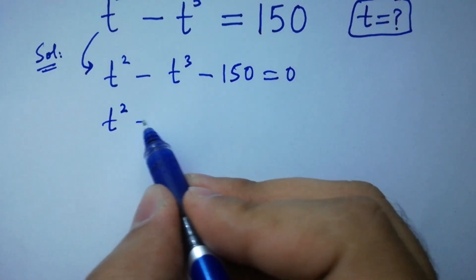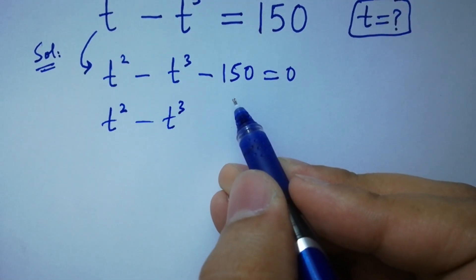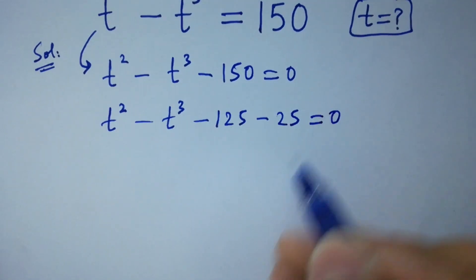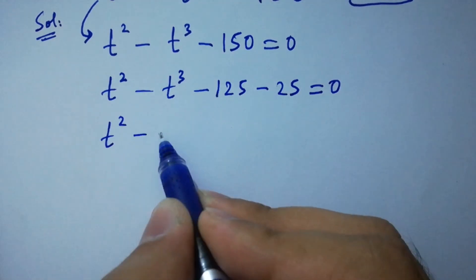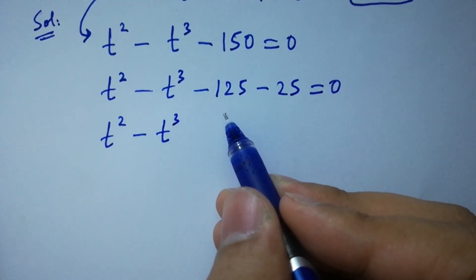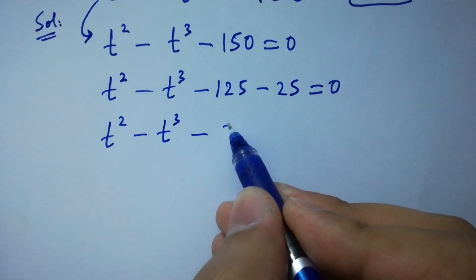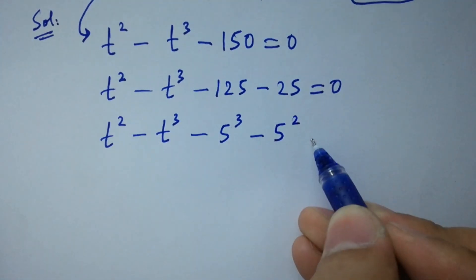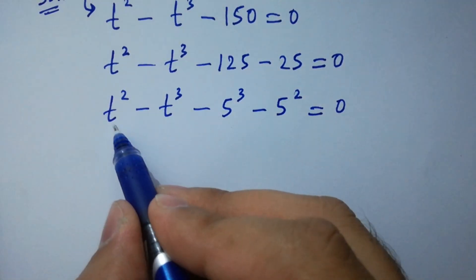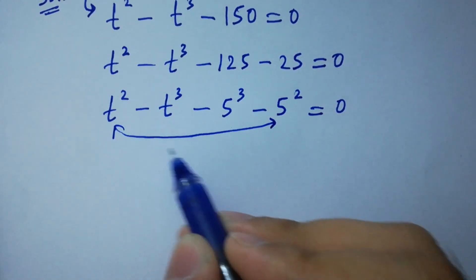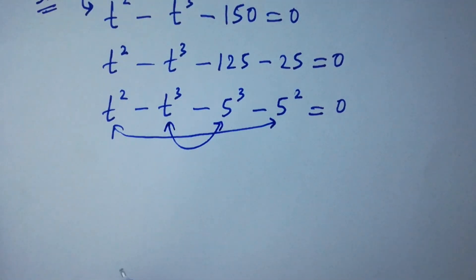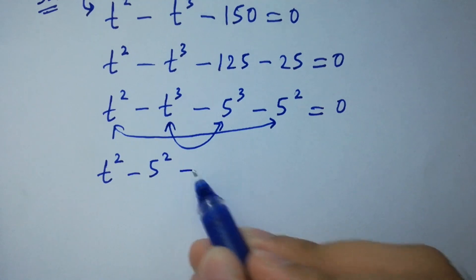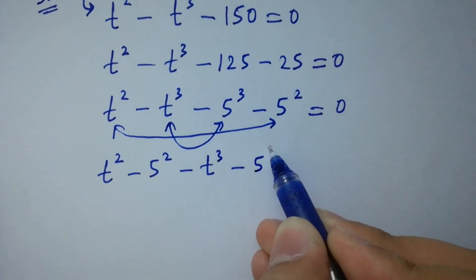By corresponding, minus 150 is the same as minus 125 minus 25, equal to 0. So we have t squared minus t cubed minus 125 minus 25, where minus 125 is the same as minus 5 cubed and minus 25 is the same as minus 5 squared, equal to 0. You can see here t squared minus 5 squared, and here t cubed minus 5 cubed.